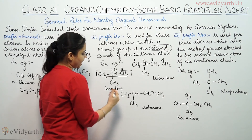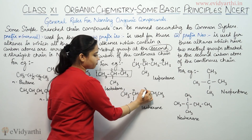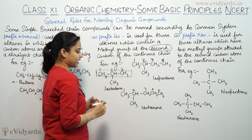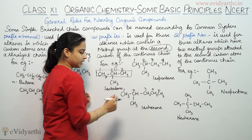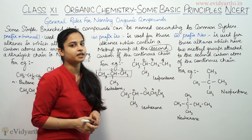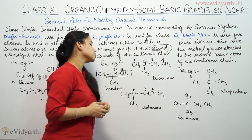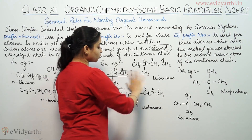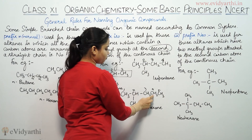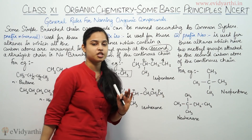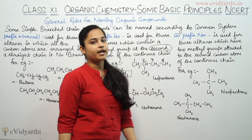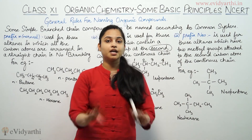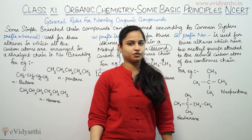Now coming to this one: 1, 2, 3, 4, 5 — a long continuous chain with 5 carbon atoms. The second carbon has a methyl group as a substituent, so the prefix is ISO. Count the total number of carbon atoms: 1, 2, 3, 4, 5, 6 — so it will be iso-hexane. I hope that the prefix N and prefix ISO are now clear.